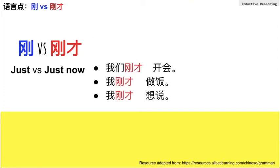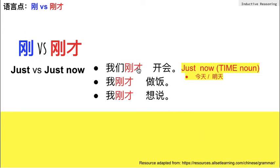刚才 is not an adverb, but it is a noun — a time noun — which is similar to 今天 and 明天. In the sentences 我们刚才开会, 我刚才做饭, and 我刚才想说, 刚才 is used to emphasize 开会, 做饭, and 想说, which were happening just now — which in most situations means one to thirty minutes, and often less than five minutes.